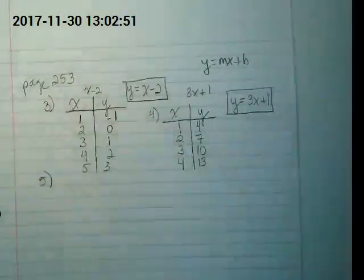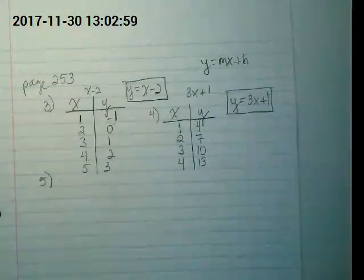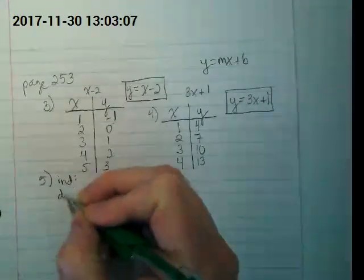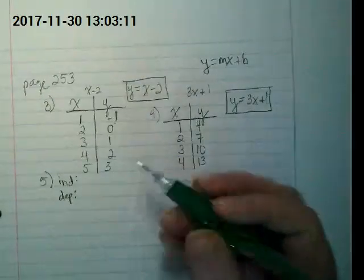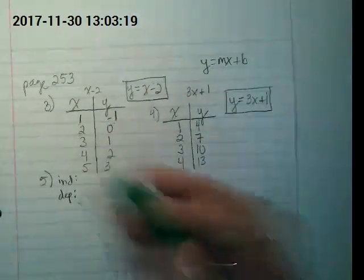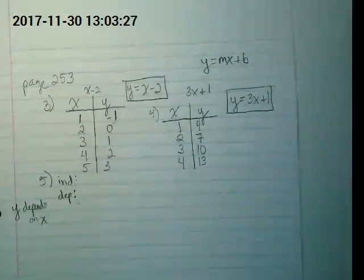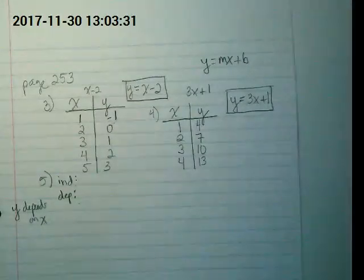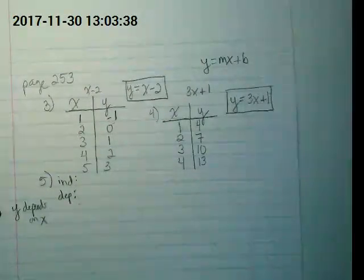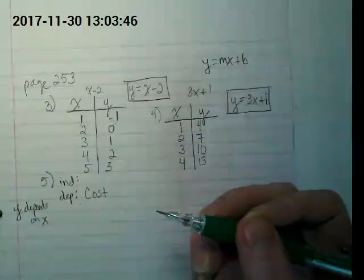Number 5. It says identify the independent and dependent variables in the situation. Independent is usually X. Dependent is usually Y. And remember what we said at the very beginning, Y depends on X. I'm going to read you a situation. A small bottle of water costs $1.99 and a large bottle of water costs $3.49. Cost depends on the size of the bottle.